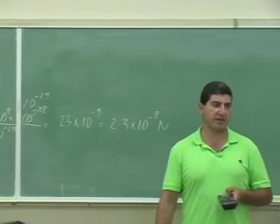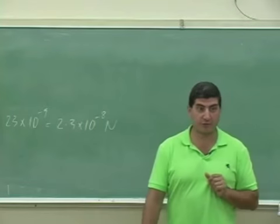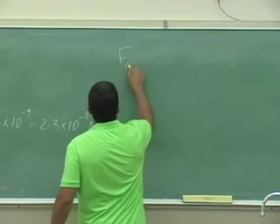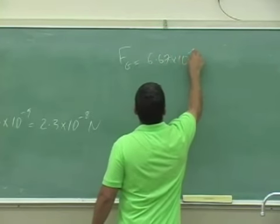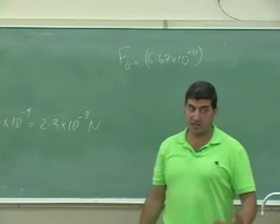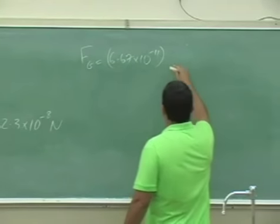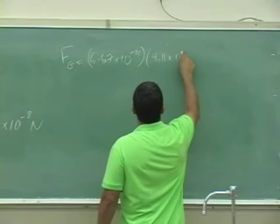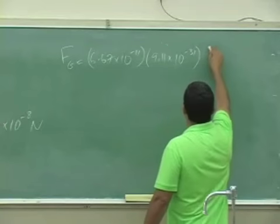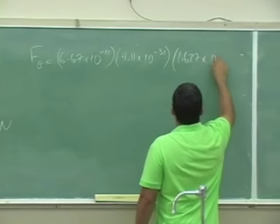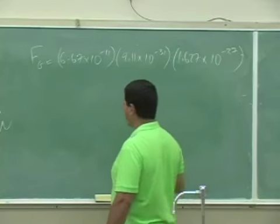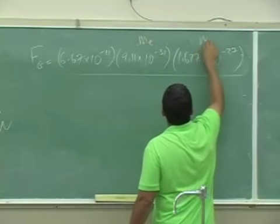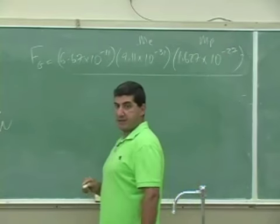That gives 2.3 times 10 to the minus 8 Newtons. Now let's find the gravitational force between the electron and the proton. The gravitational constant is 6.67 times 10 to the minus 11 — the universal constant of gravity is small. Times the mass of the electron, which is 9.11 times 10 to the minus 31, times the mass of the proton, which is 1.67 times 10 to the minus 27, divided by the distance between them squared.